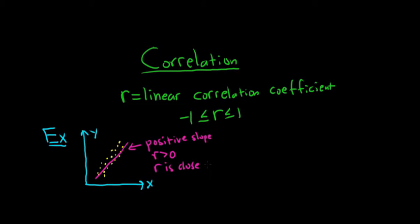The closer R is to 1, the closer the dots are to the line. And conversely, the closer the dots are to the line, the closer R is to 1. So the closer you are to 1, the better the pattern. In this case we have a straight line pattern and so we say we have positive linear correlation.